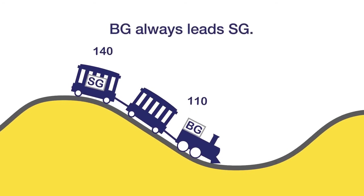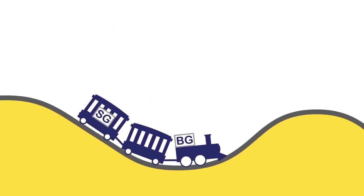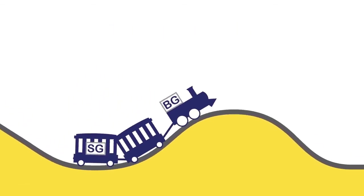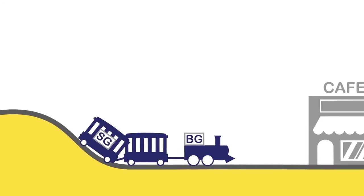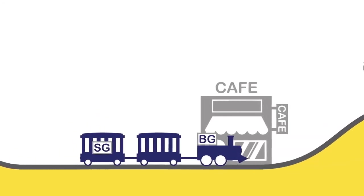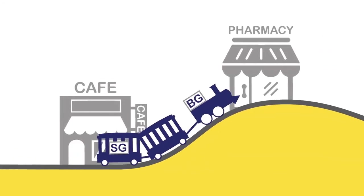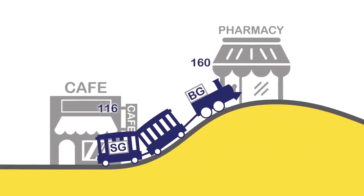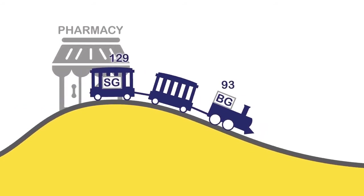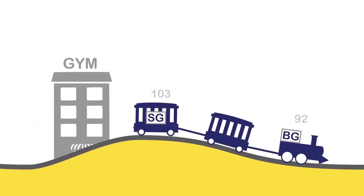So, as you can see, whether glucose levels are trending up or trending down, blood glucose leads sensor glucose. There will be a bigger difference in blood glucose and sensor glucose readings on the bigger hills, or when glucose is changing more rapidly after food, after insulin, and after exercise.